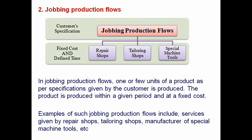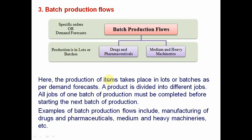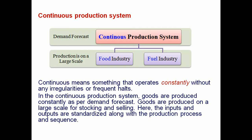Similarly in jobbing production flows, the customer specification may have a fixed cost and defined time — for example repair shops, tailoring shops, and special machine tools. In the continuous production system, raw materials get processed through a standard set of processes and sequences to produce a continuous stream of products. All facilities and standardized inputs are put through a series of successive connected operations. The same set of inputs flows through the same routes, and the same processes convert them into finished goods.